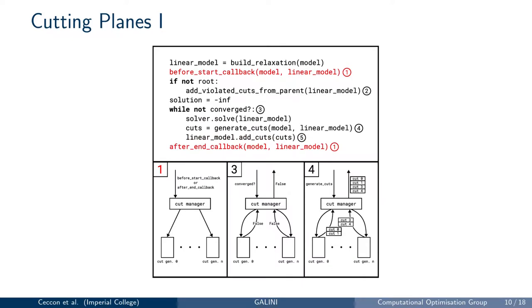To have a working cut generator, you need to implement two callbacks called before and after the cut loop, which you can use to initialize data structures or clean up variables between different nodes. You also need to provide a function that informs Galini when your cut generator has finished generating cuts. Galini will stop the cut loop after all cut generators finish or after a maximum number of iterations. Finally, you implement the method that returns the cuts to be added to the optimization problem — this method has access to both the original user model and the relaxation along with its solution, and must return a list of valid cuts. If you can't generate any cut, you can return an empty list, and if all generators return empty lists, Galini exits the cut loop early.